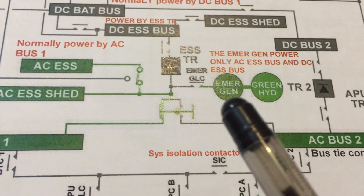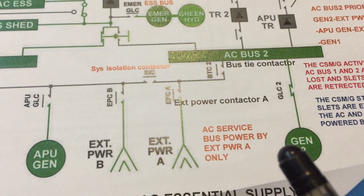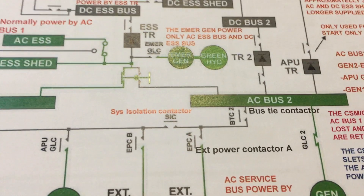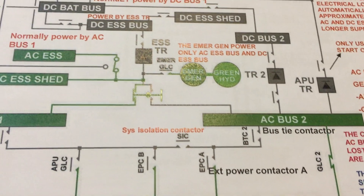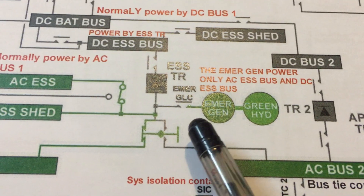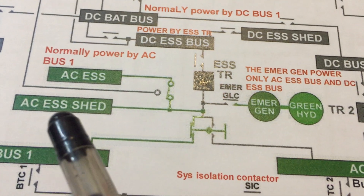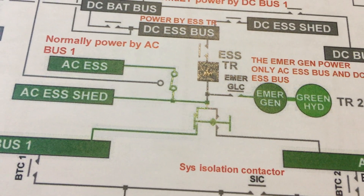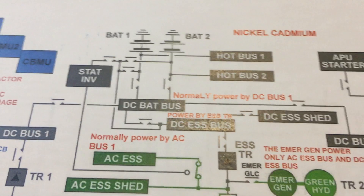We also have the emergency generator. From its name, the emergency generator can only be used in the emergency configuration. The emergency configuration occurs when we lose AC bus number one and AC bus number two. In that case the aircraft goes to the emergency configuration, where the RAT — ram air turbine — extends to power the green hydraulic system, and the emergency generator uses the green hydraulic system to power the aircraft.